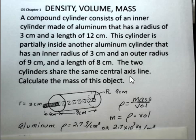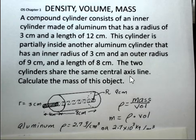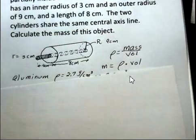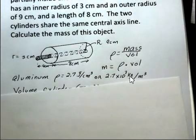2.7 grams per cubic centimeter, or in a little more standard metric units, 2.7 times 10 to the third kilograms per cubic meter.